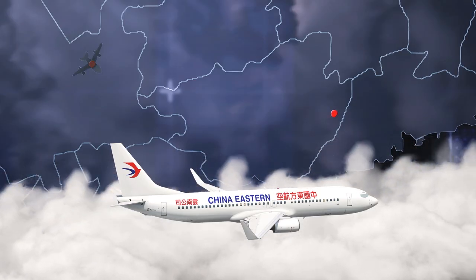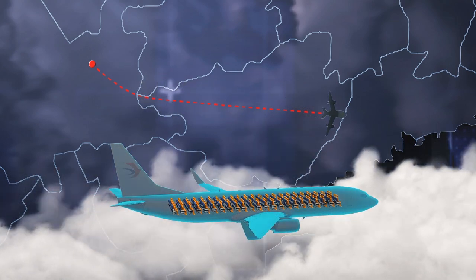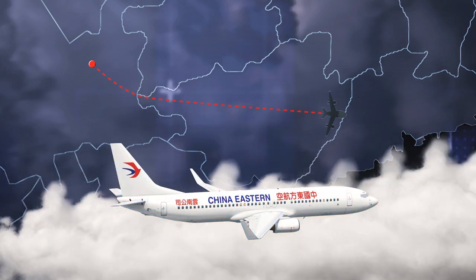On Monday, the Boeing 737-800 was traveling from Kunming, carrying 132 people, and had been due to land in Guangzhou in the afternoon.